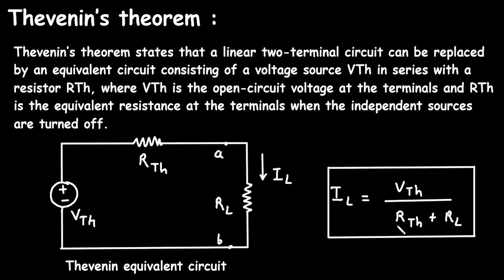This formula shows that the current through RL depends on the Thevenin voltage Vth and the total resistance, which is the sum of Rth and RL.